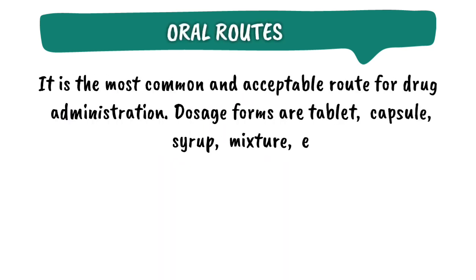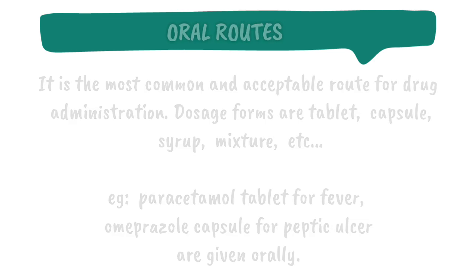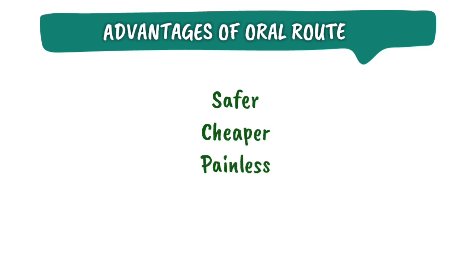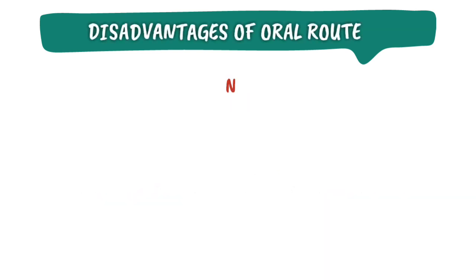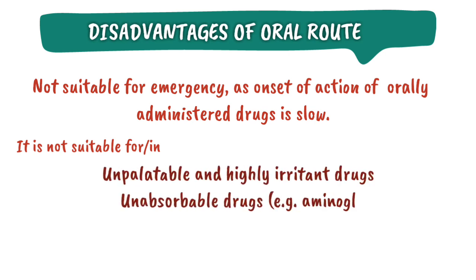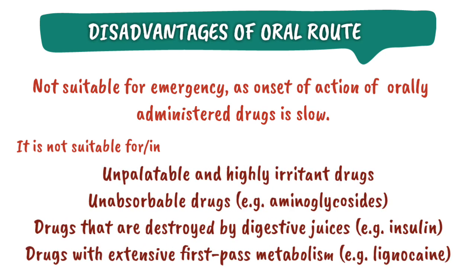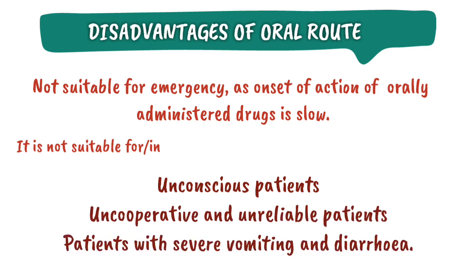Oral route. It is the most common and acceptable route for drug administration. Dosage forms are tablet, capsule, syrup, and mixture — for example, paracetamol tablet for fever and omeprazole capsule for peptic ulcer are given orally. Advantages: it is safer, cheaper, painless, convenient for repeated and prolonged use, and can be self-administered. Disadvantages: not suitable for emergency as onset of action is slow. Not suitable for unpalatable and highly irritant drugs, unabsorbable drugs, drugs destroyed by digestive juices, drugs with extensive first-pass metabolism, unconscious patients, uncooperative and unreliable patients, and patients with severe vomiting and diarrhea.